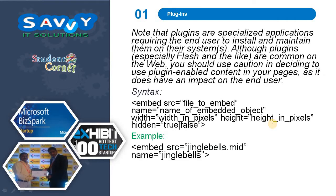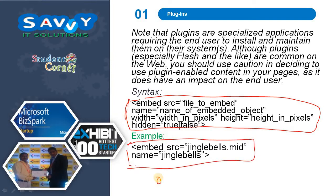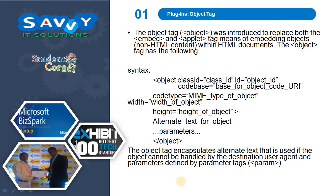Note that plugins are specialized applications requiring the end user to install and maintain them on their systems. Although plugins are common on the web, you should use caution in deciding to use plugin-enabled content in your web pages as it does have an impact on the end user. The syntax for creating plugins involves adding them into our HTML. One tag is embed, with attributes: source, name of the file, width, height, and hidden — either true or false. Apart from this, one more is the object tag.